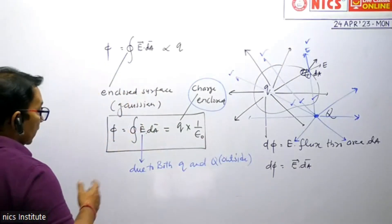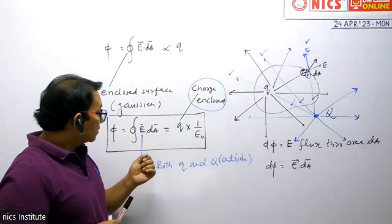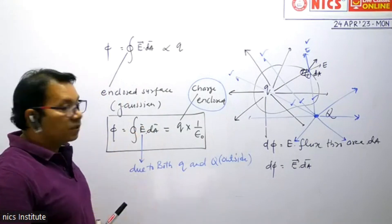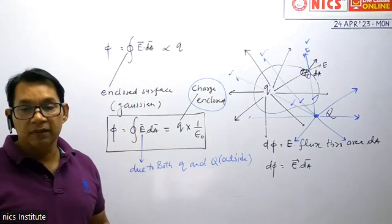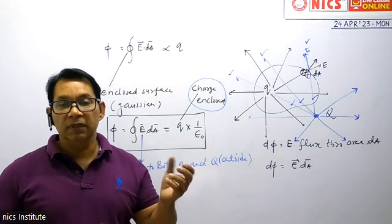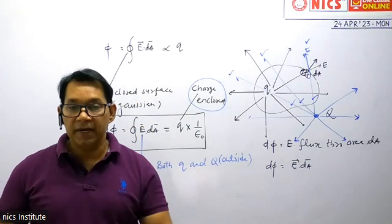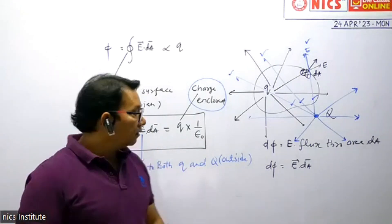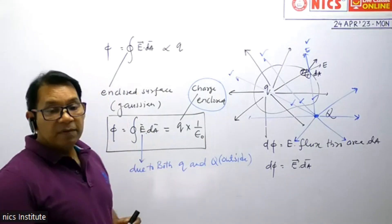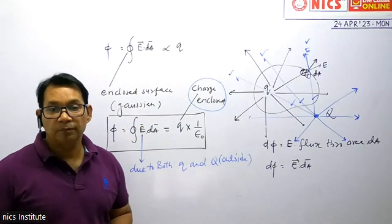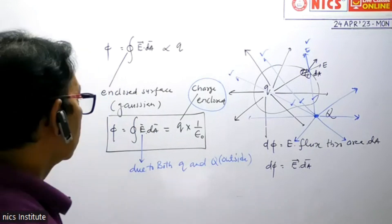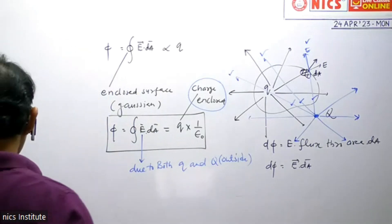How will an exam question look? They will give you an expression and ask: this E is because of — and give four options: Q inside, Q outside, both, or none of these. The electric field in Gauss's law is due to all charges — inside and outside — but the right-hand side of Gauss's law contains only the charge enclosed.